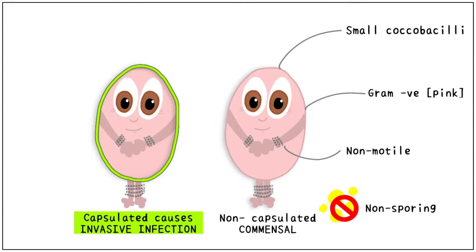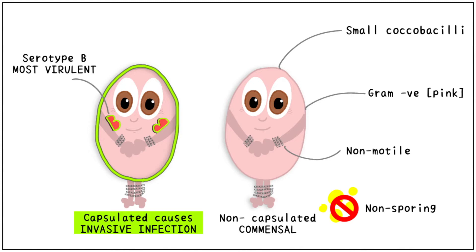The non-capsulated form is a commensal in the respiratory tract, meaning it is normally found there and it can cause a localised infection in certain conditions. The capsulated form is extremely dangerous and it causes an invasive type of infection. The most virulent capsulated strain is that of serotype B.